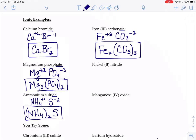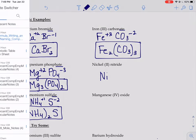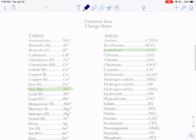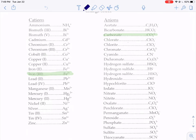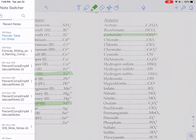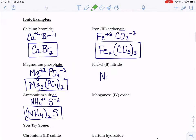If you wanted nickel 2 nitride, symbol for nickel is Ni. But when you check your charge sheet, there's multiple kinds of nickel. This one, nickel 2, means nickel with a plus 2 charge. So we want nickel plus 2.